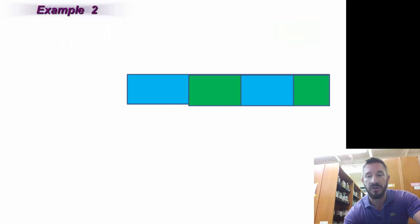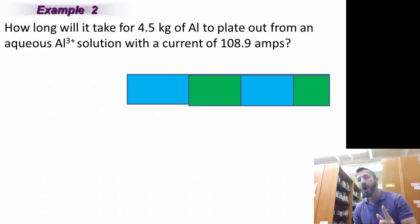This is exciting the way I've covered up the problem. You'll find this out in a second. So here's a question. How long will it take for 4.5 kilograms of aluminum to plate out from an aqueous aluminum solution with a current of 108.9 amps? So we've got some important numbers. 4.5 kilograms.